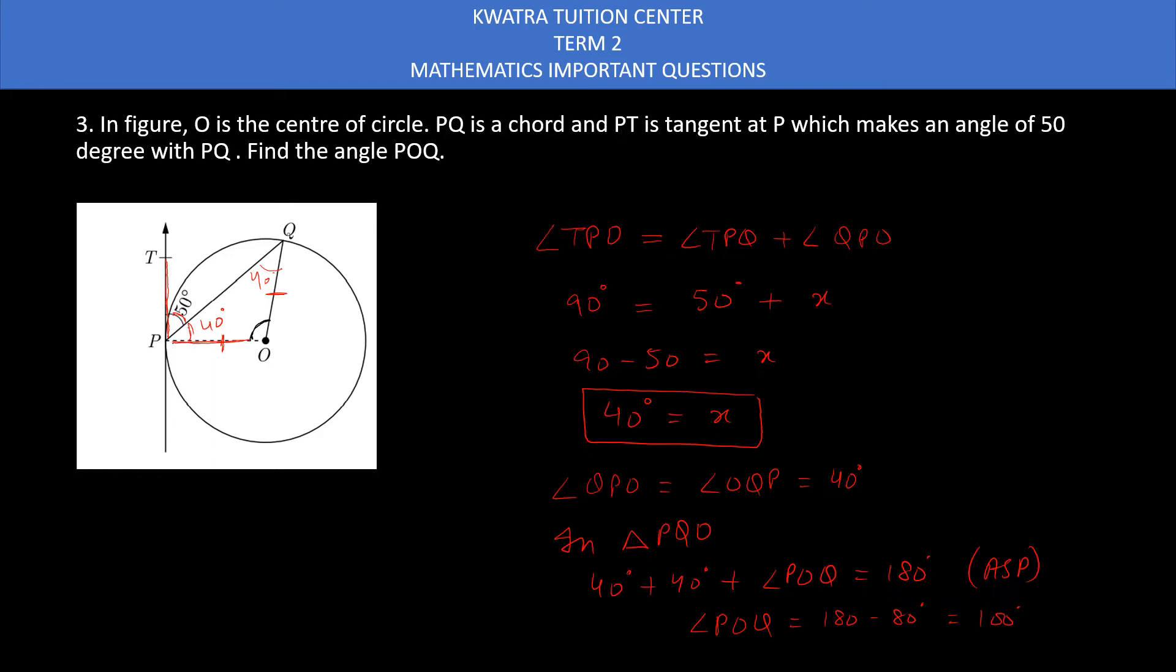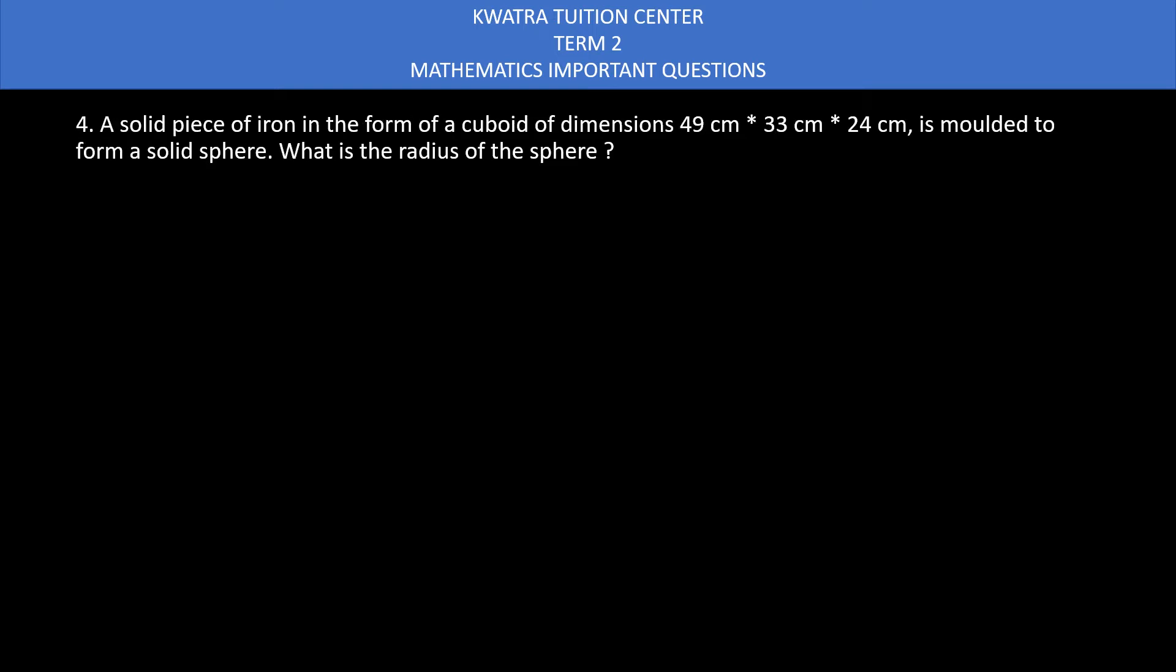Now moving to question four. A solid piece of iron in the form of a cuboid of dimensions 49 cm, 33 cm, and 24 cm is molded to form a solid sphere. Now you can see a solid sphere will be made from cuboid. What does this mean? The volume will be the same. It is molded to another shape. So you can write volume of solid sphere equals volume of cuboid.